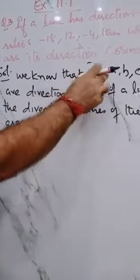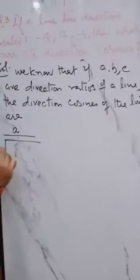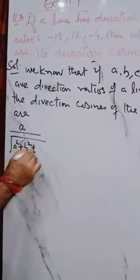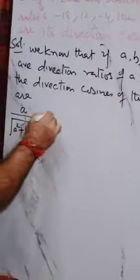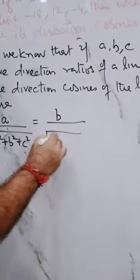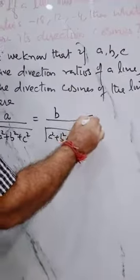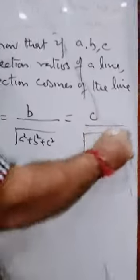It's a upon square root of a square plus b square plus c square, equal to b upon again the same, a square plus b square plus c square, and c upon a square plus b square plus c square.